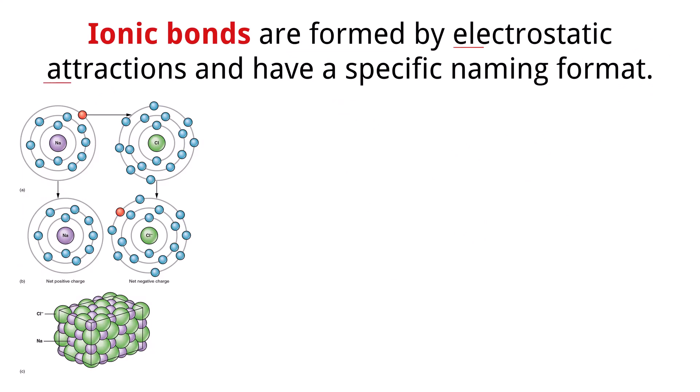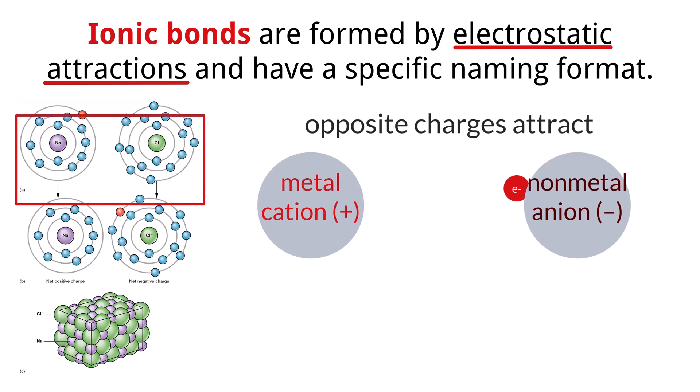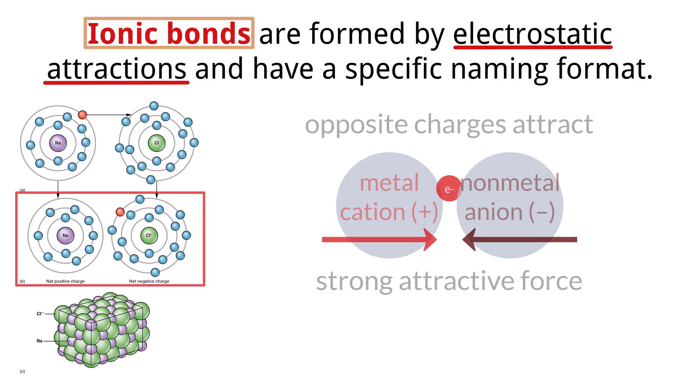The very essence of an ionic bond lies in the electrostatic attraction between cations and anions. Remember that opposite charges attract, just like the north and south poles of magnets. When a metal atom loses electrons to become a cation and a non-metal atom gains those electrons to become an anion, the resulting positive and negative charges create a strong attractive force. This force pulls the ions together, forming a stable ionic compound. Think of it as a strong electrical glue holding the ions in a crystal lattice structure.